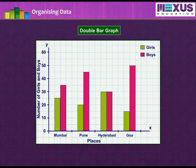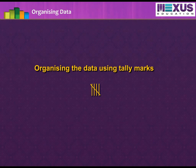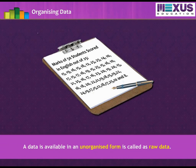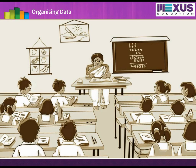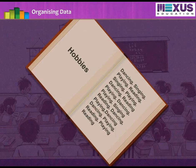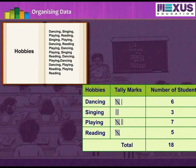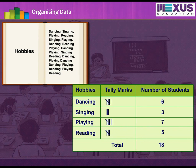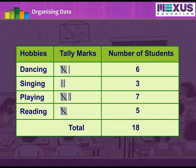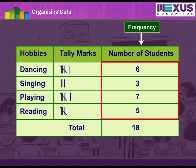Now let us learn some terms relating to organizing the data using tally marks. A data available in an unorganized form is called Raw Data. Now to get meaningful inferences, we need to organize it systematically. Suppose a group of students were asked about their hobbies and the following were the results. Now tabulating it in tally marks, the number of tallies before each hobby gives the number of students who like that particular hobby, which is called the frequency of that hobby.